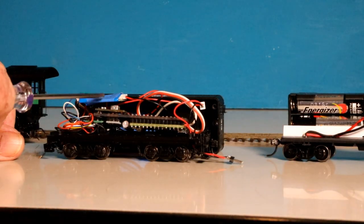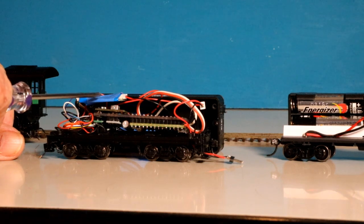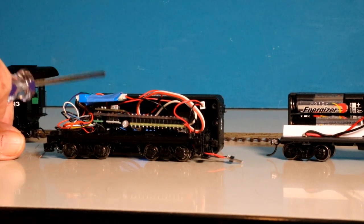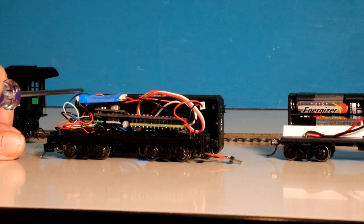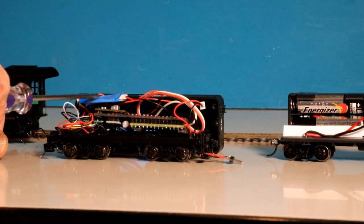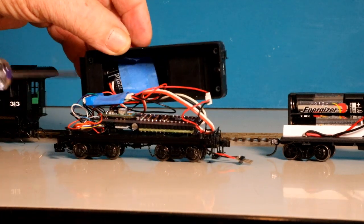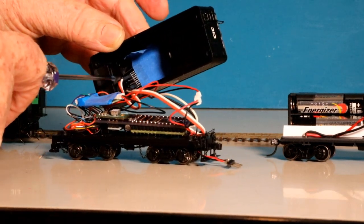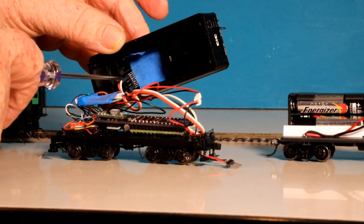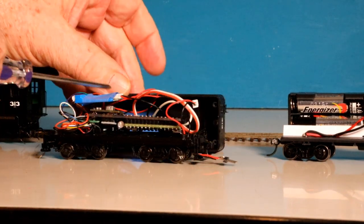You can see the decoder right here. That's the Digitrax decoder. It simply has a piece of tape wrapped around it to hold the additional leads coming out of it. In the tender, you can see the ESP-01 module that does all the WiFi work back there. That's tucked up inside the tender.